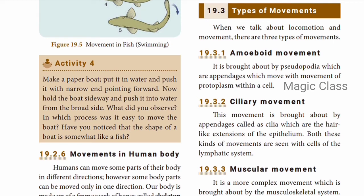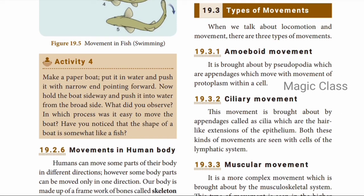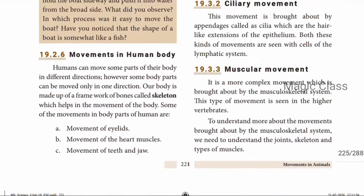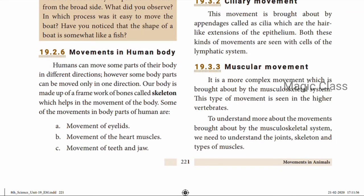There are three different types of movements: amoeboid movement, ciliary movement, and muscular movement. In ciliary movement, organisms use cilia — hair-like structures — to move. Both amoeboid and ciliary movements are seen in cells of the lymphatic system.